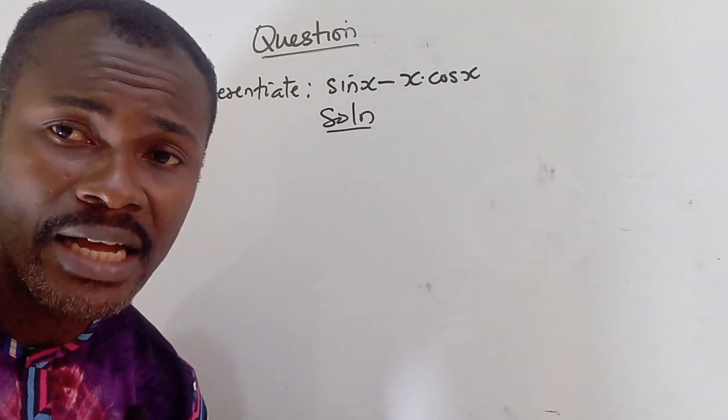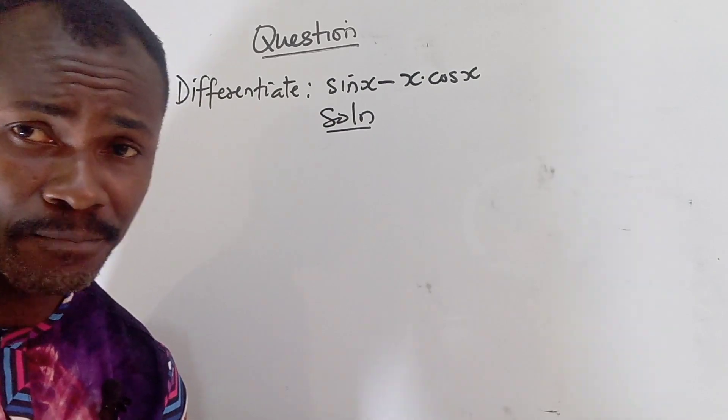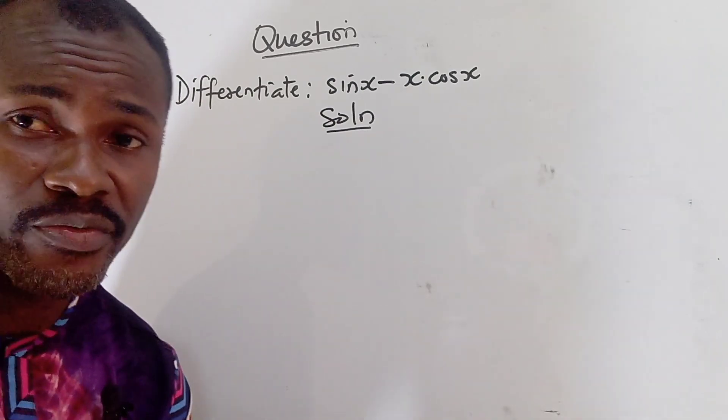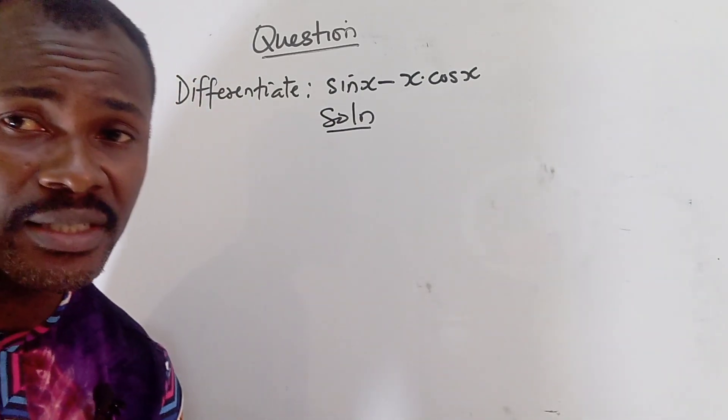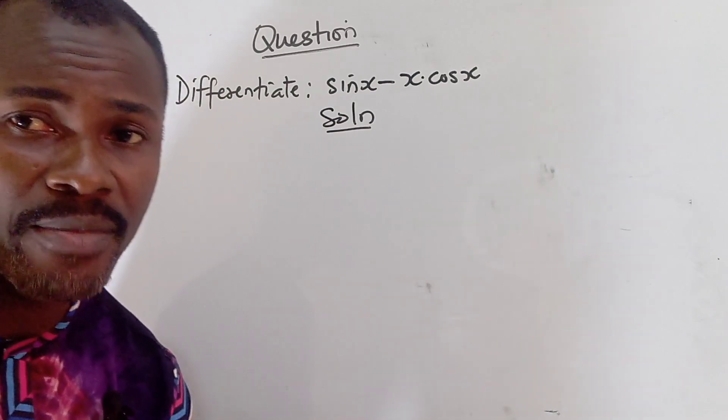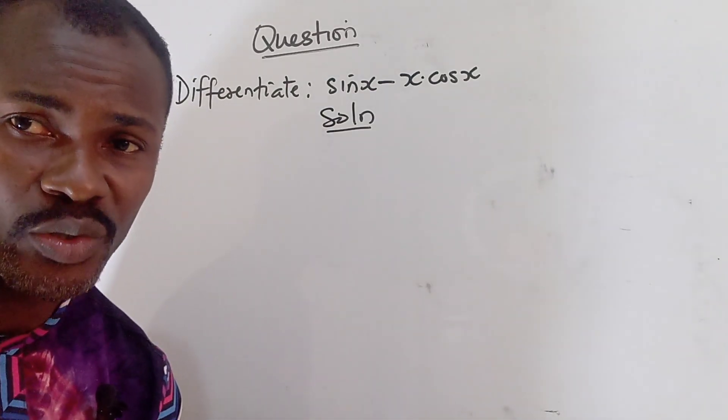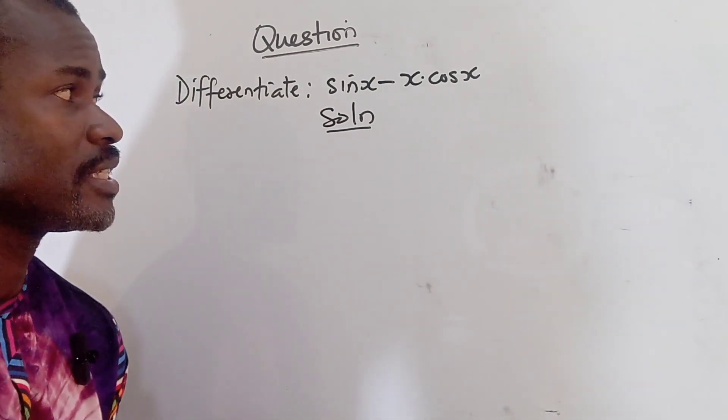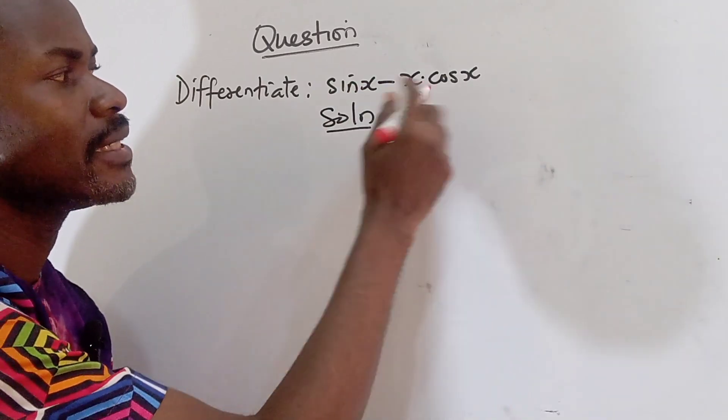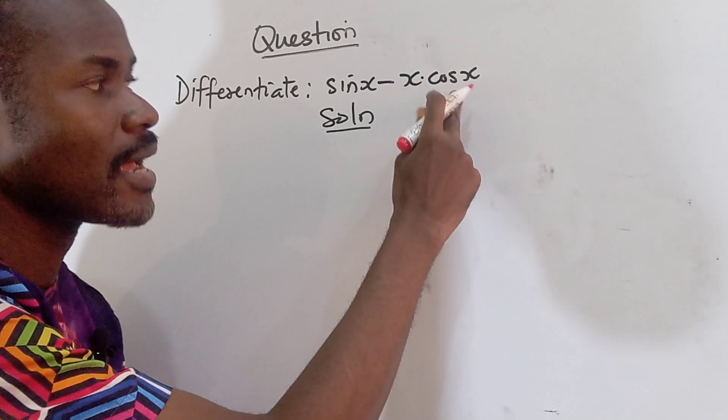Today's problem is on calculus and differential calculus, on trigonometric functions. So the question says, differentiate sine x minus x multiplied by cos x. All right, the first thing you want to do is to identify the problem. This is a problem on calculus. And on this part, we have to differentiate sine x minus x cos x.